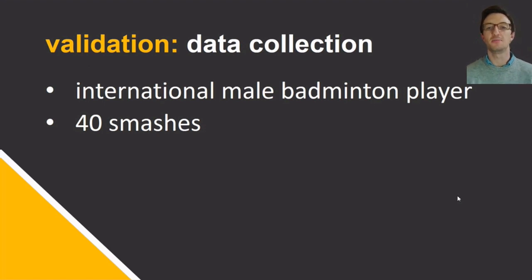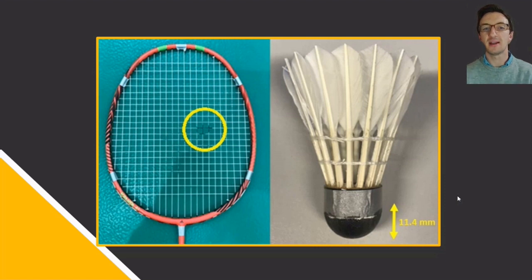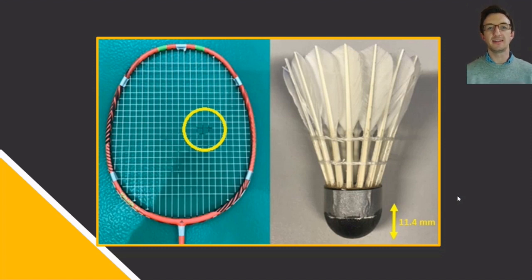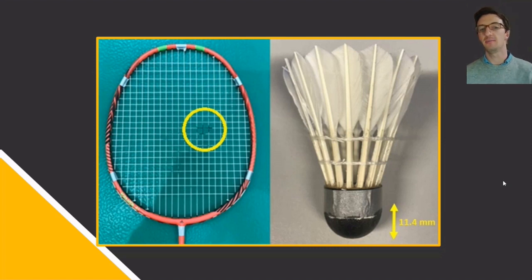To evaluate the method, we recorded 40 smashes by one international male badminton player before applying the method to additional players. After reflective tape was applied around the base of the shuttle, the remaining cork was coated with stencil ink prior to each trial, leaving an impression on the racket that was subsequently digitised — giving a 2D coordinate on the racket face of where impact occurred. Digitisation was performed three times by the same investigator with results averaged.